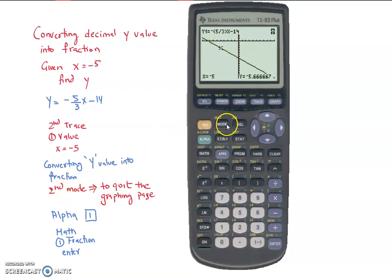That's to quit the graphing page. Now, we need to enter y here, so that the calculator knows that we want that exact value of y that was in the graphing page to be converted.